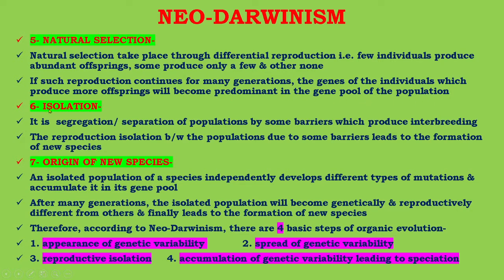Next is isolation — the segregation or separation of a population by some barriers which prevent interbreeding. Thus reproductive isolation between populations due to some barriers leads to the formation of new species, that is speciation. The next important feature is the origin of new species.